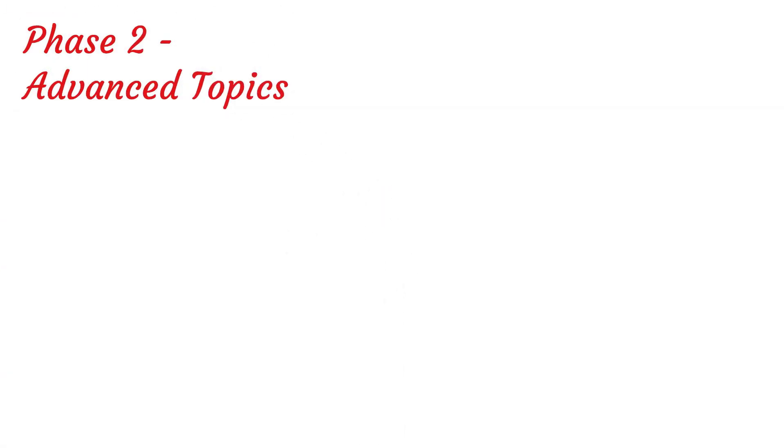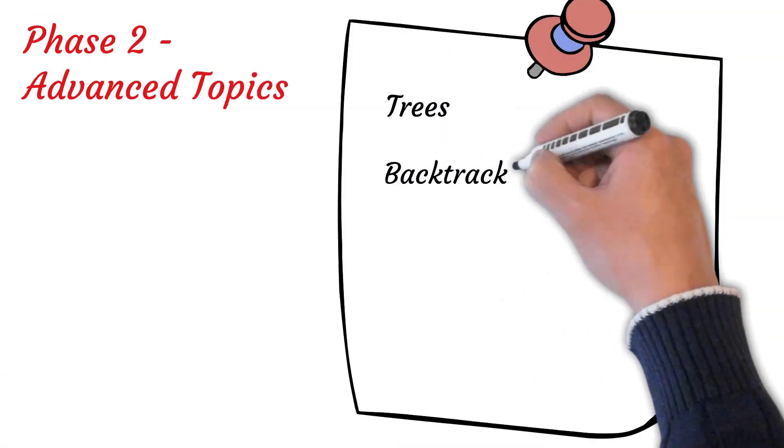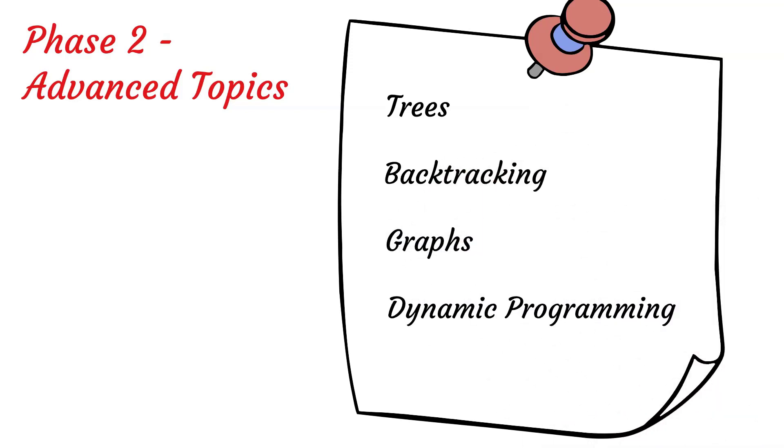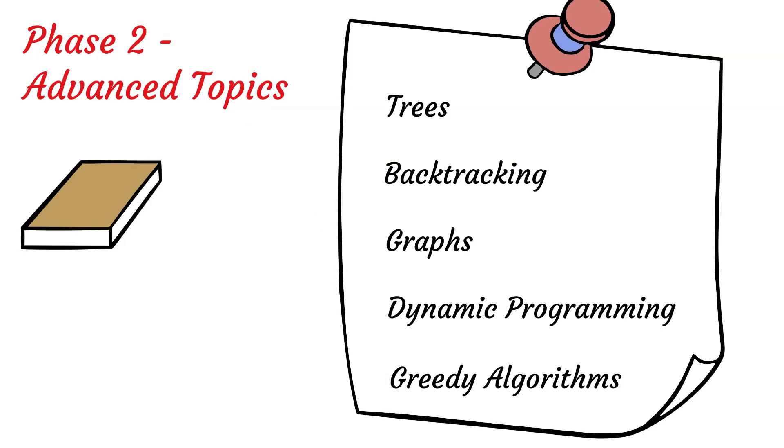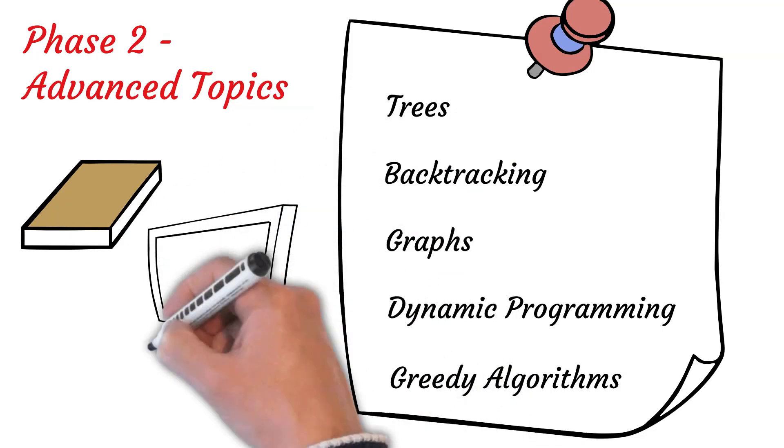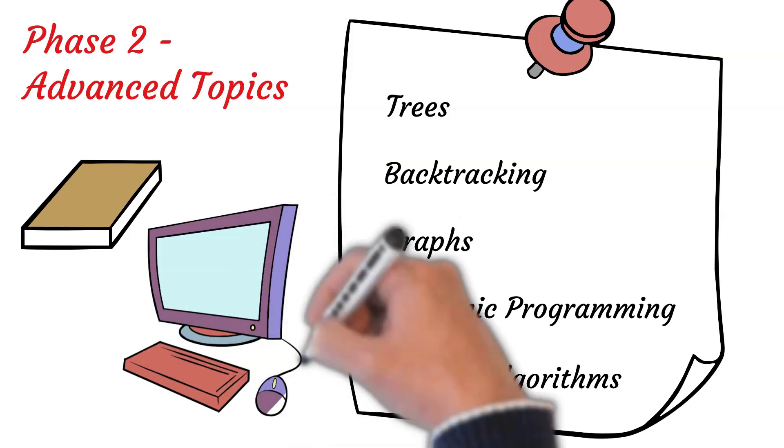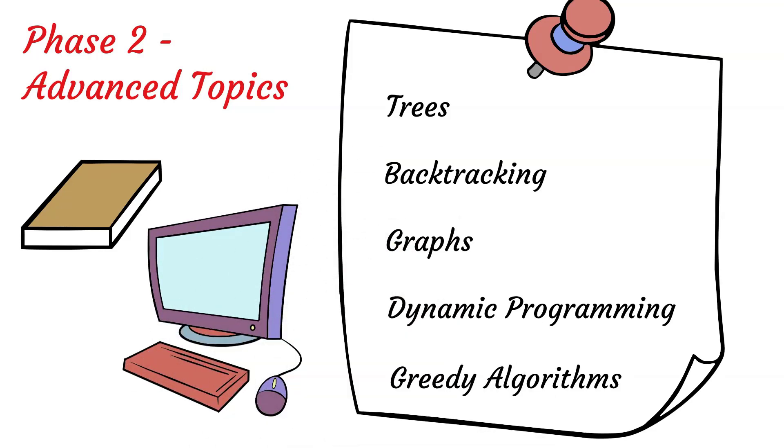Now, let's learn some advanced topics in this phase such as trees, backtracking, graphs, dynamic programming, and greedy algorithms. So, you need to learn theory first. And again, I would recommend the book for theory instead of online articles. Once you are done with theory, start solving problems from online platforms. You can follow the same process as you followed in phase one.